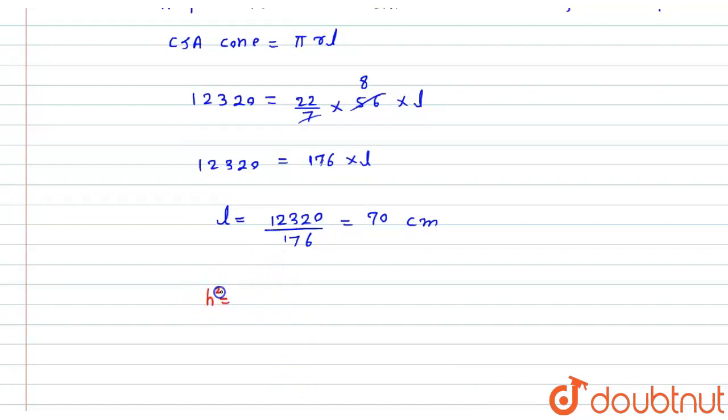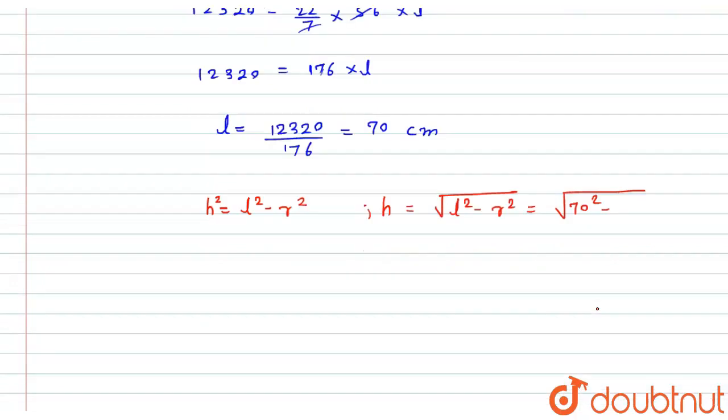So from here I will get h equals square root of l square minus r square. Now here I will put the value simply. So l is 70 square minus r, we have given the radius that is 56 square.